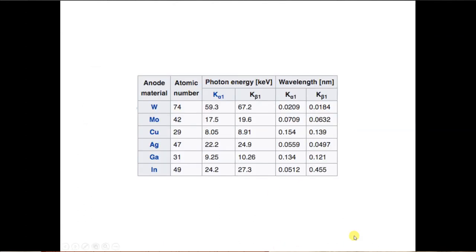Moving on. This table here shows different materials used for anode, tungsten, molybdenum, copper, silver, gallium and indium. These are their atomic numbers and the corresponding energy and wavelength of X-rays produced. As you can see higher is the atomic number, higher is the energy of the photons produced.